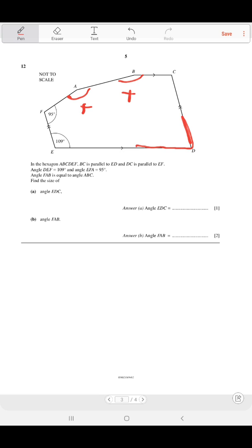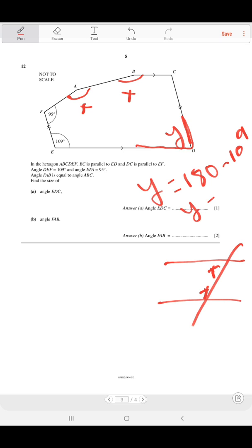As you learned before, if you have two co-interior angles, the sum of the co-interiors add up to 180. To find this angle, let EDC equal Y. To find Y, it's 180 minus 109, so Y equals 71 because of co-interior angles.